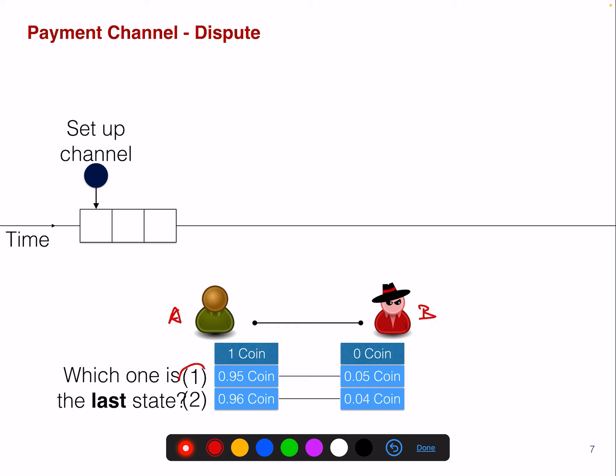So now we have two states. We have one and two. These are two different blockchain states. So which one is the last state? How do we tell the blockchain? Or how does the blockchain actually know which one is the last state?